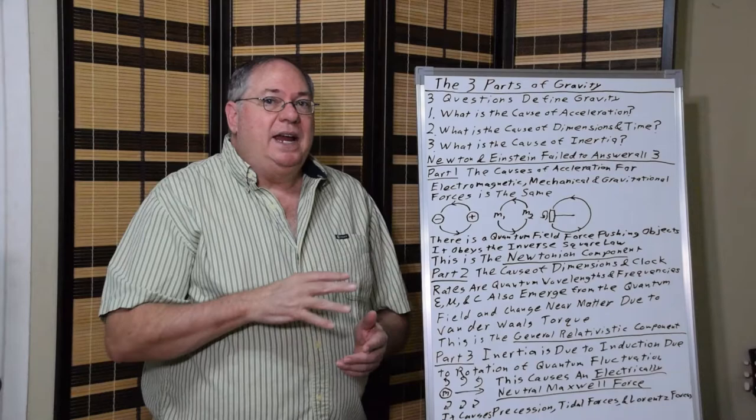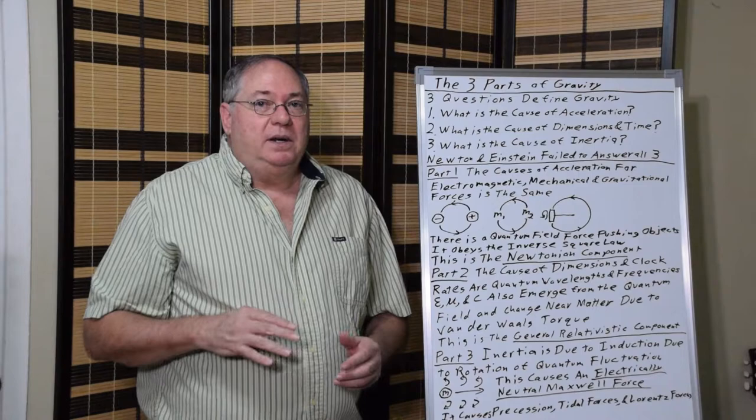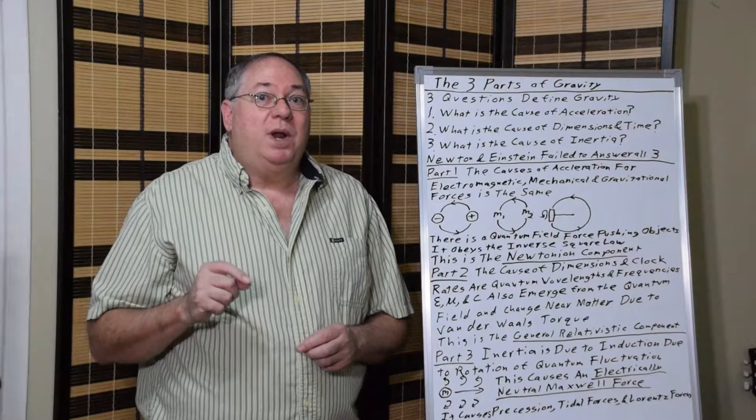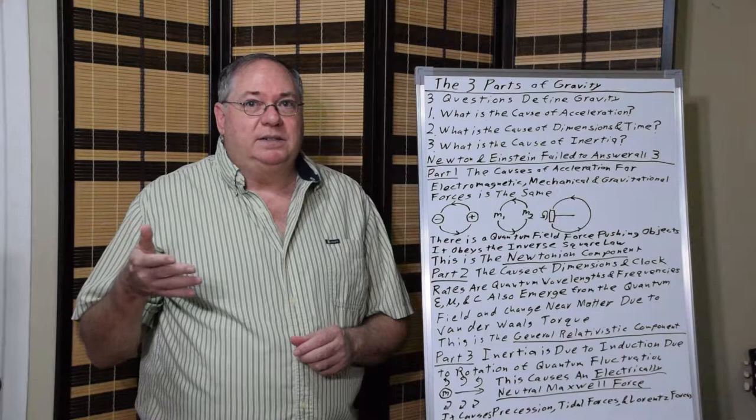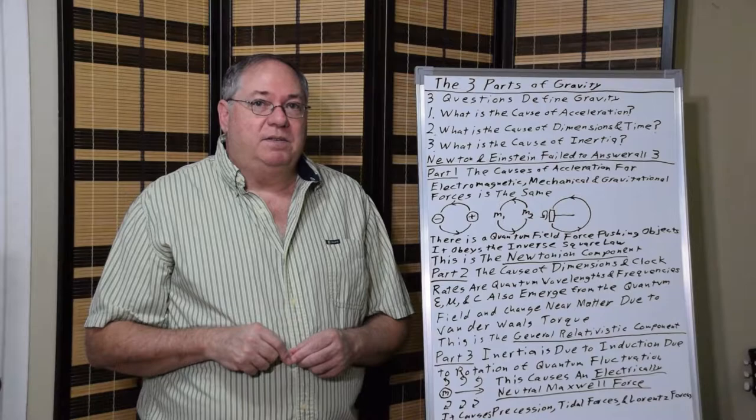In each one of these cases, the cause of acceleration is the same. And that's where the physicists screwed up. Because if you have to answer the question, what is the cause of electromagnetic acceleration, you can't do what Einstein did and just say gravitational acceleration doesn't need a cause, it just follows the curvature. Because you still need a cause of electromagnetic acceleration.